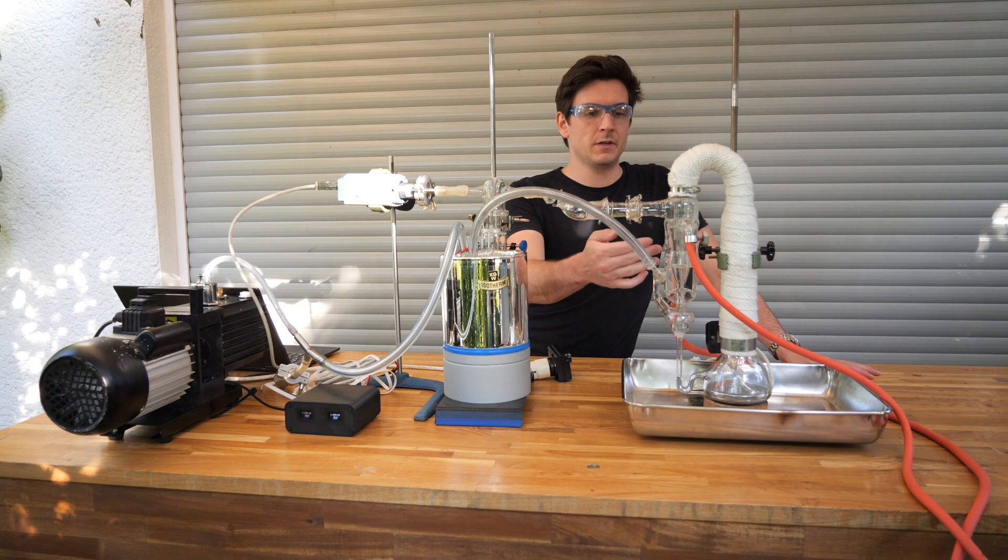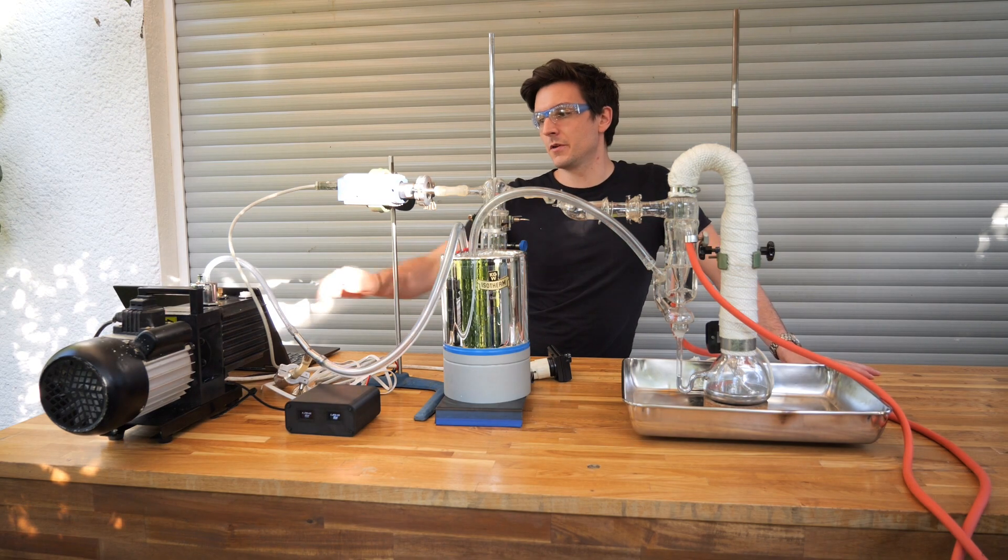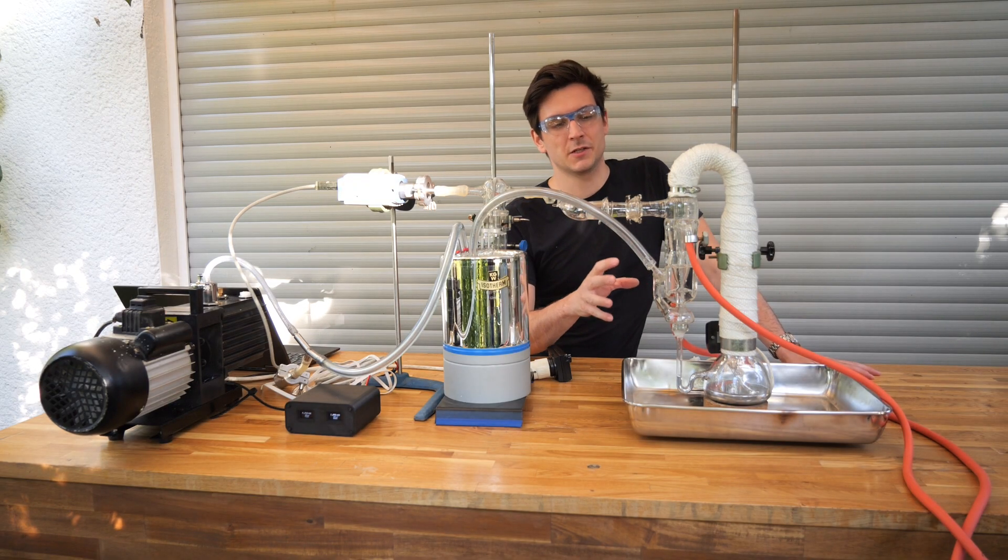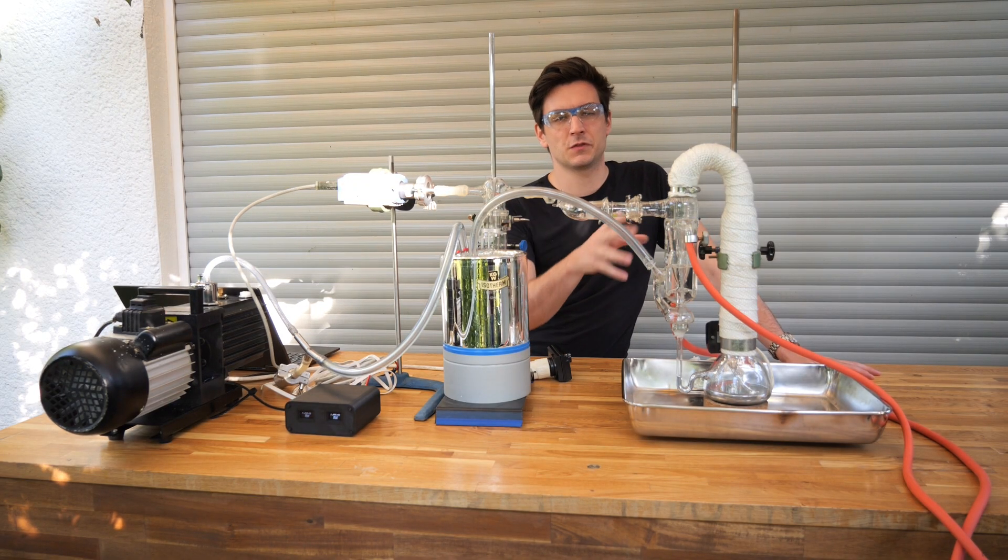Before we can turn on the diffusion pump we have to turn on the roughing pump to pump the system down. The diffusion pump would basically not work at atmospheric pressure.